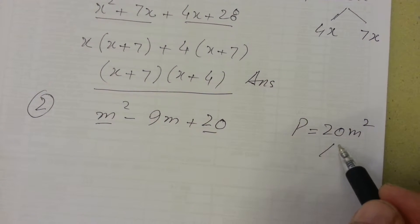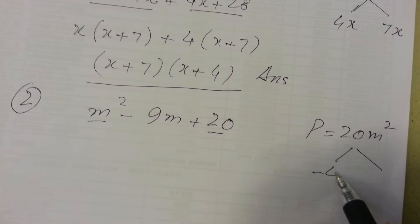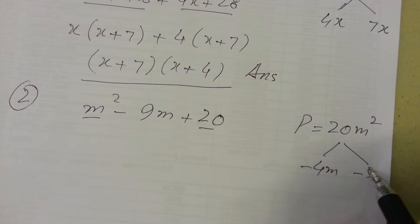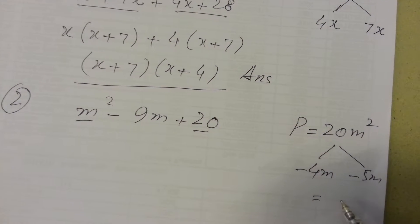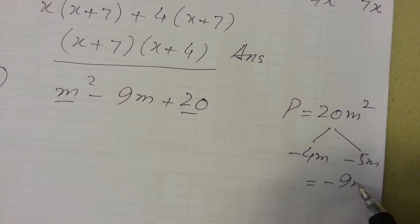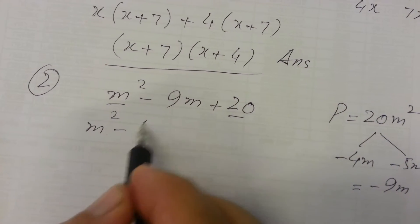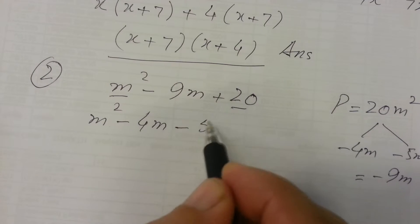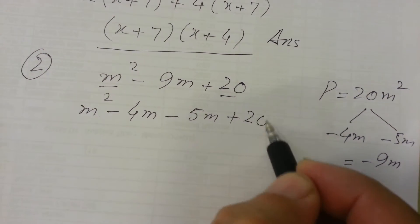Now we want two numbers. They are minus 4m and minus 5m, because the sum of these numbers is minus 9m, and their product is 20m squared. So we write m squared minus 4m minus 5m plus 20.